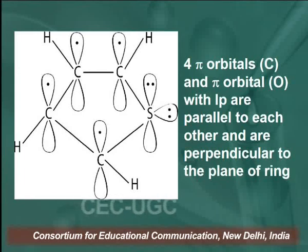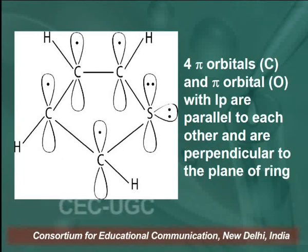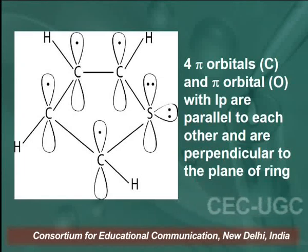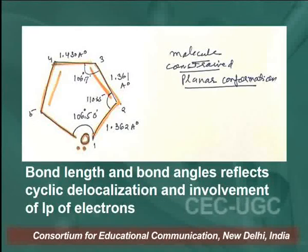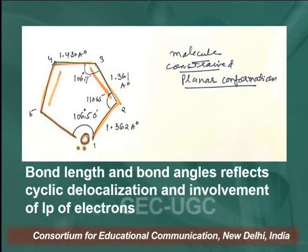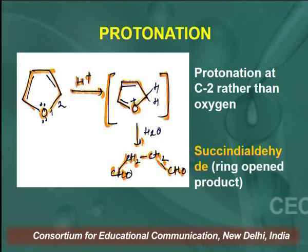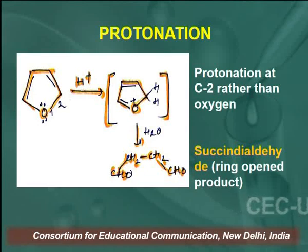The structure of furan is the same as thiophene, with sulfur replaced by oxygen. The p orbital of each carbon atom contains one electron, which is delocalized within the ring along with the lone pair of electrons, making furan an aromatic compound. Bond lengths and bond angles reflect the cyclic delocalization and involvement of lone pair of electrons. As in pyrrole and thiophene, protonation in furan also takes place at the C2 carbon atom.